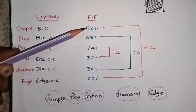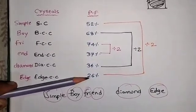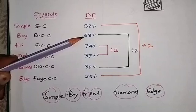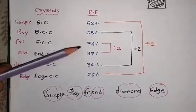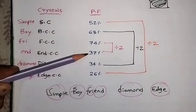How? This: for simple cubic 52 percentage, half of that is 26 percentage for edge center. And in the same way, for body centered 68, half of that is for diamond. Again, for FCC 74, half of that is 37 percentage.